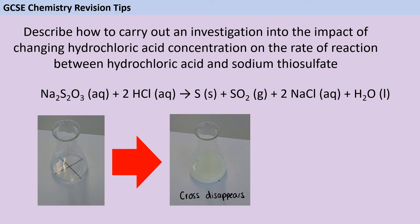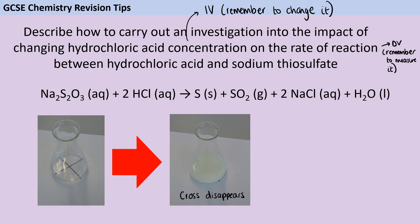As with any investigation, I would suggest starting out by identifying what the variables are, making sure your method changes the independent variable and measures the dependent variable. Here, our independent variable is the concentration of the hydrochloric acid, because that's what the question says is being changed, and what we're going to measure is the rate of reaction. This reaction produces a precipitate — a solid product from aqueous solutions. You can see from the equation that the state symbol for sulfur is solid, so it will make the reaction turn turbid.